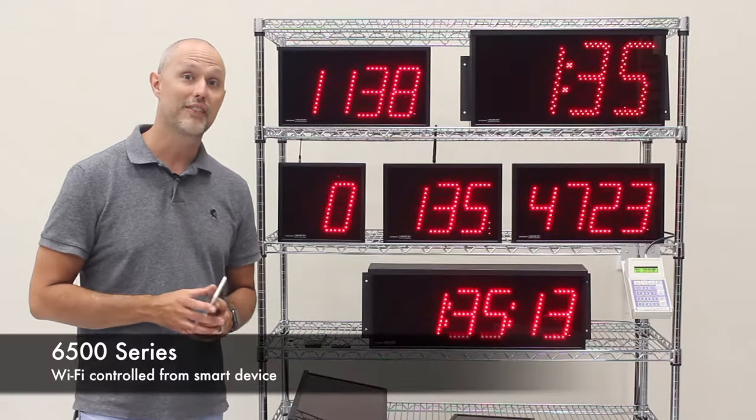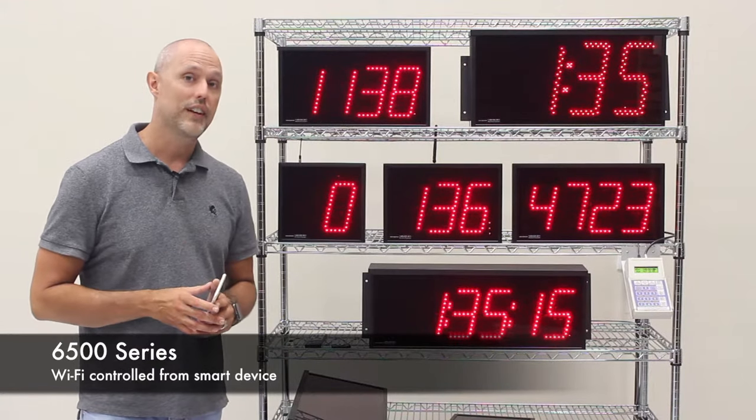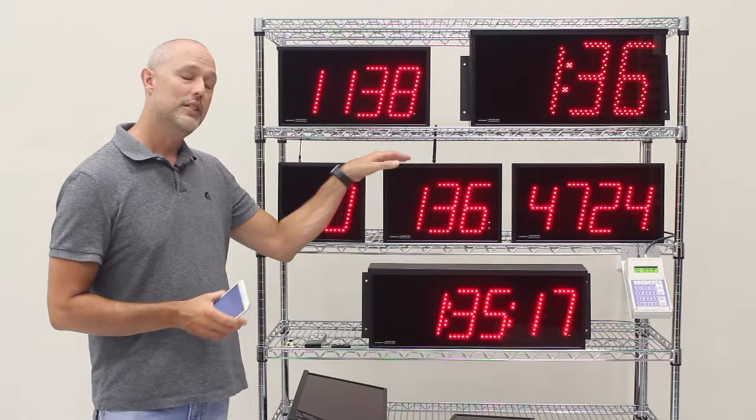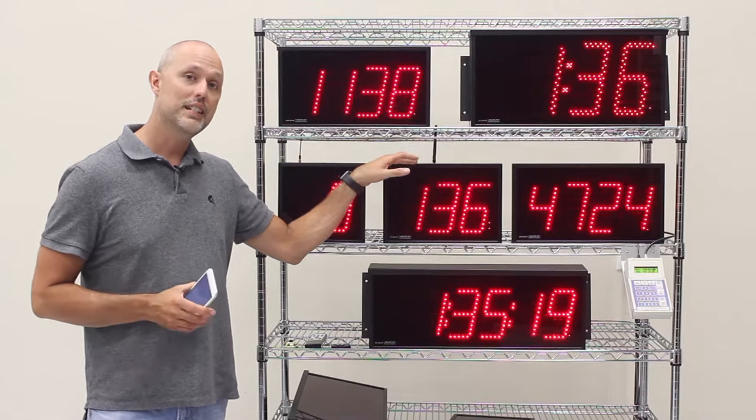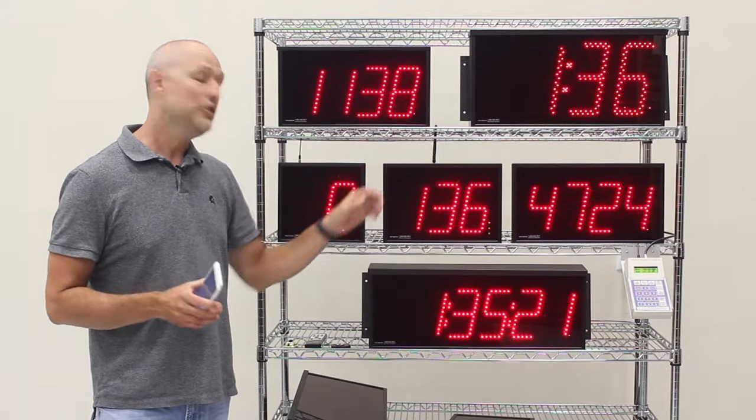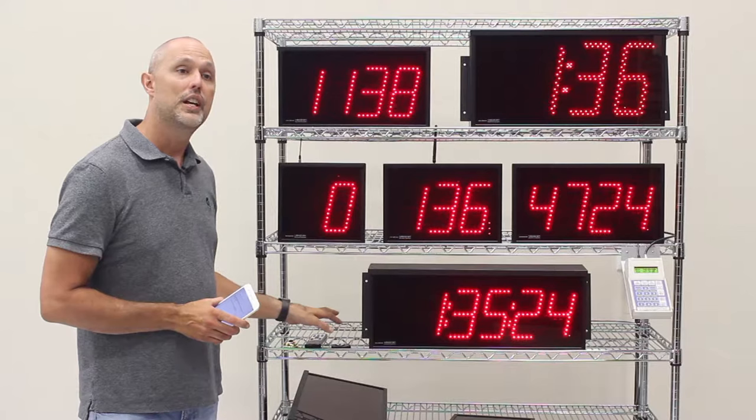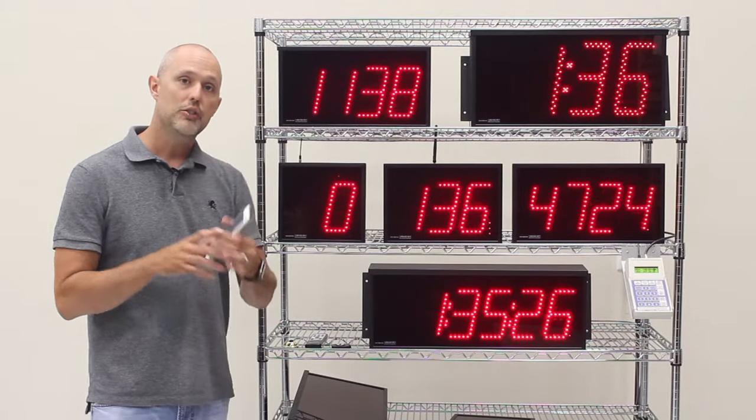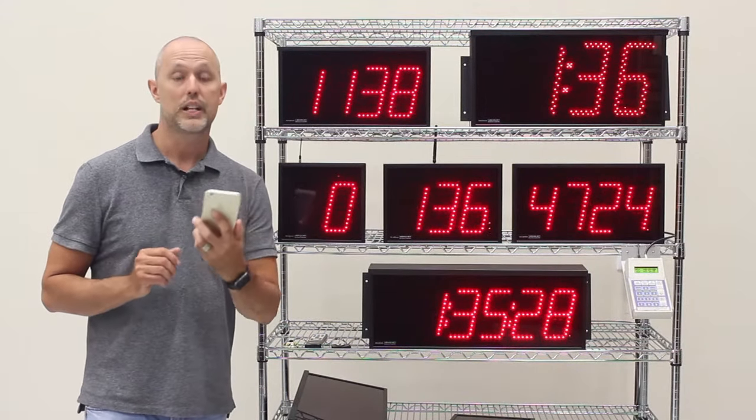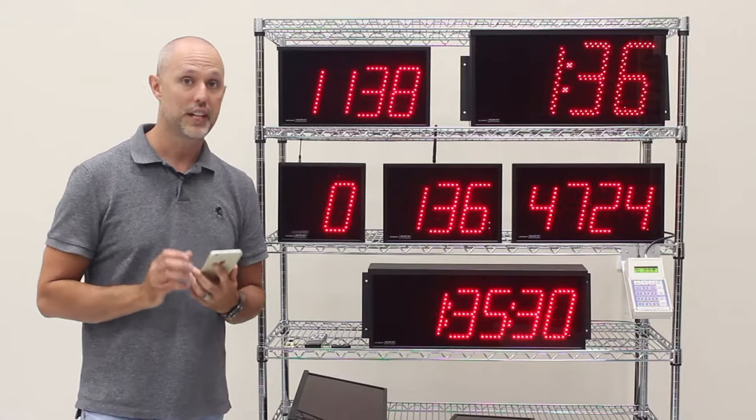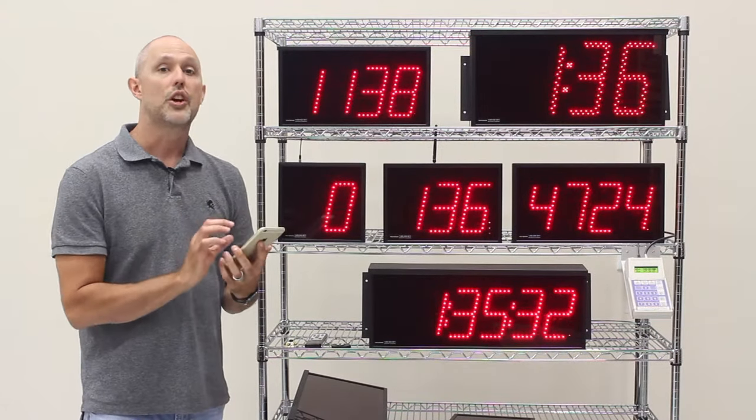Now let's discuss the 6500 series. It's our Wi-Fi display. All the brains are in the display similar to the 6300, but instead of using a remote control to set the parameters and start times, you can use a free iOS and Android app right from your phone if you're on the same Wi-Fi network to start and stop and view the times and configure the display.